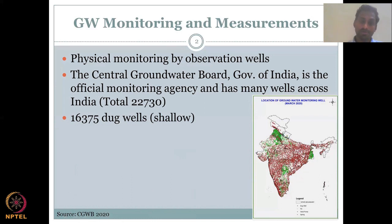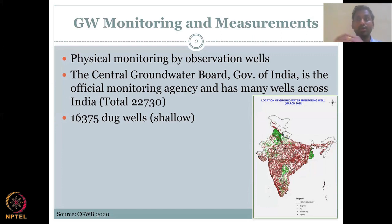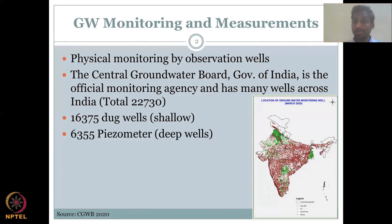Around 16,375 wells are for shallow aquifers. A shallow aquifer extends from the land surface down to a confining impervious layer. Below that impervious layer you have another — the deeper aquifer — monitored by piezometers, around 6,355 piezometers for accessing deep wells.